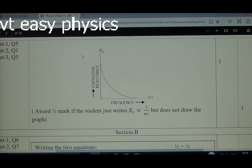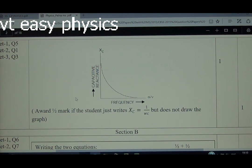Logic is quite simple. Xc is 1 upon omega c, but Xl is omega l. Xl is proportional to f, Xc is inversely proportional to f. So this is all about Padna region paper.